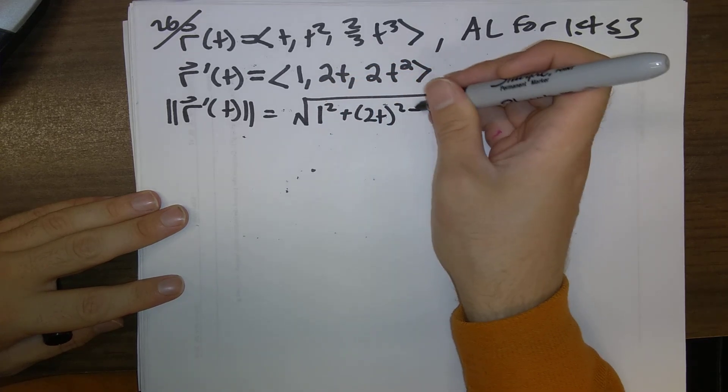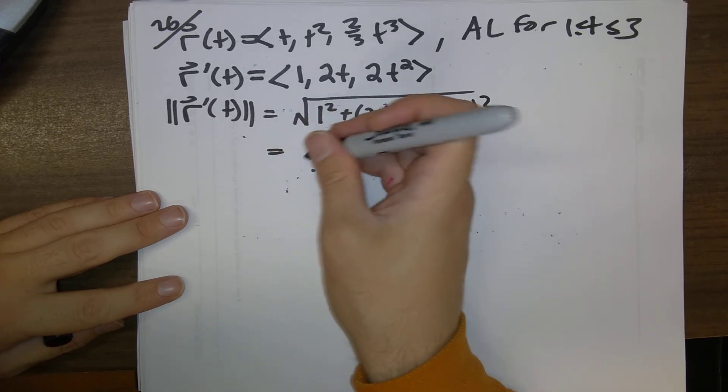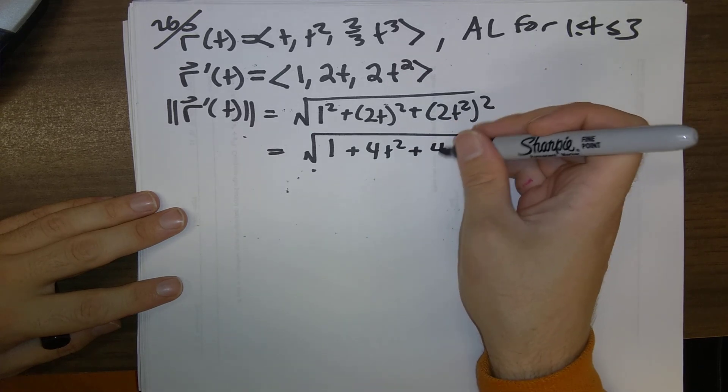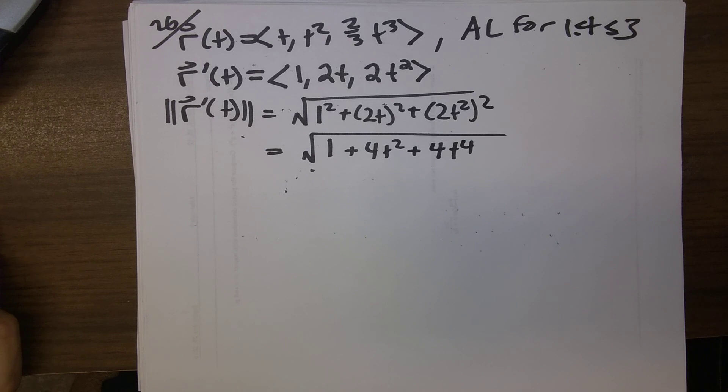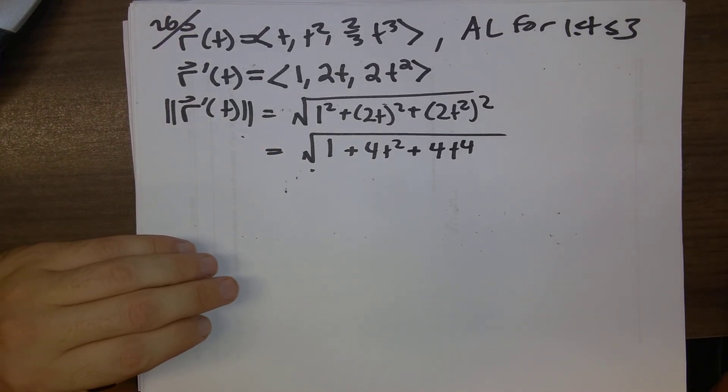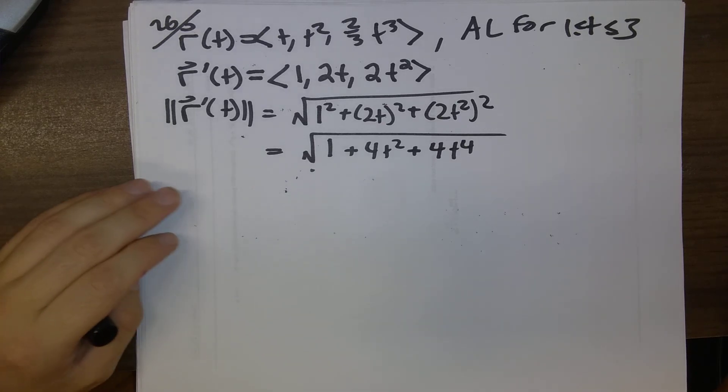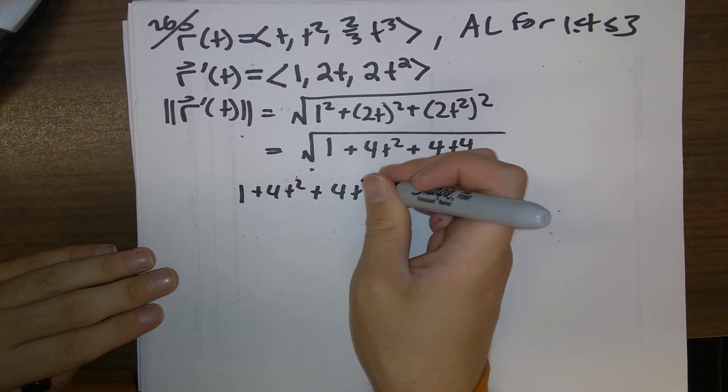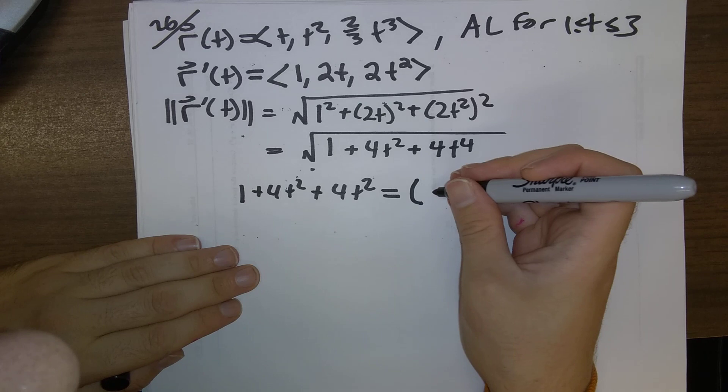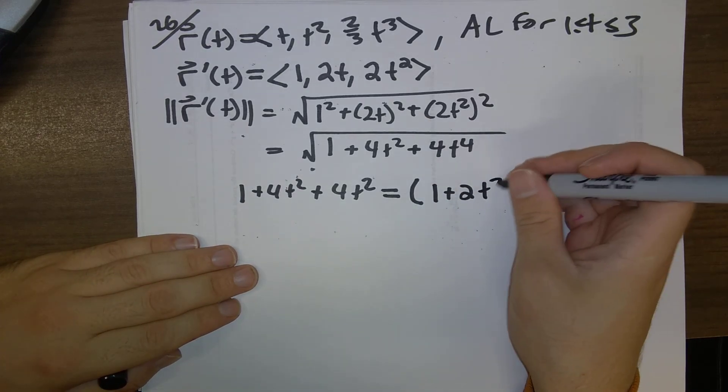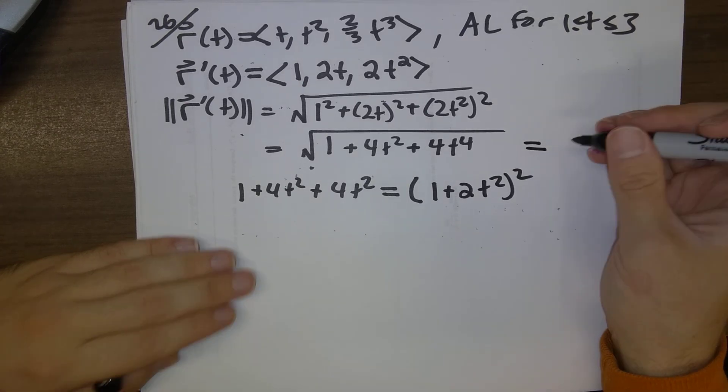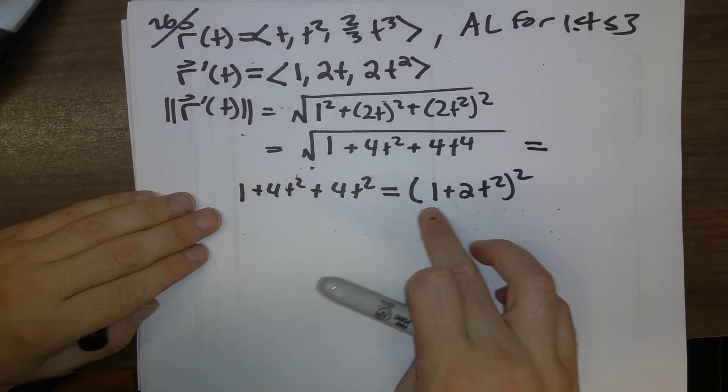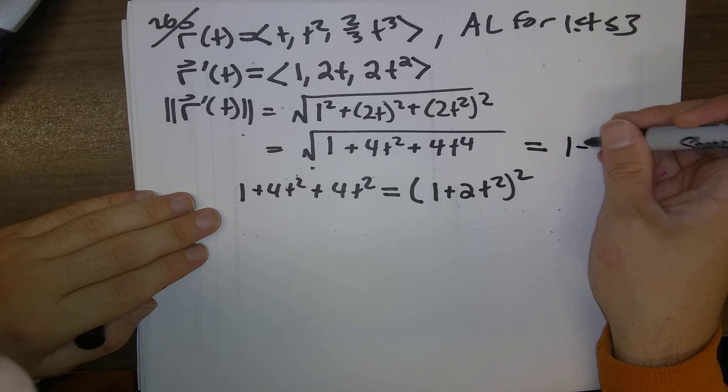And we also know we need the speed, the magnitude of the velocity vector. So, 1 squared plus 2t quantity squared plus 2t squared quantity squared. So, what is this? 1 plus 4t squared plus 4t to the fourth. Now, this problem is made a lot easier if, at this point, you're able to spot that 1 plus 4t squared plus 4t to the fourth is a perfect square. It's just 1 plus 2t squared squared. Because everything in sight is going to be positive for these values of t, the square root of 1 plus 2t squared squared is just 1 plus 2t squared.